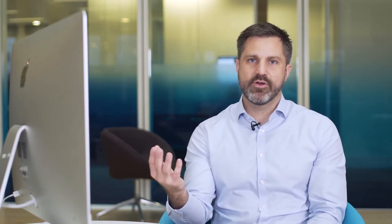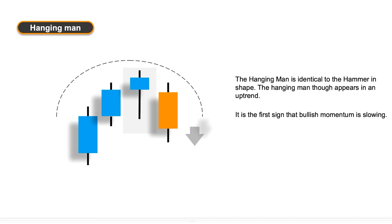The next candle formation is the hanging man. The hanging man is exactly the same as a hammer, except instead of being at the bottom of a trend it's at the top. The sellers have been trying to battle it out but in the end the buyers have dominated and the price has finished close to the top of the candle. If the next day those sellers come back into the market we could see a reversal, and the confirmation is the orange or downward candle that follows, which the hanging man formation signalled was potentially going to happen.